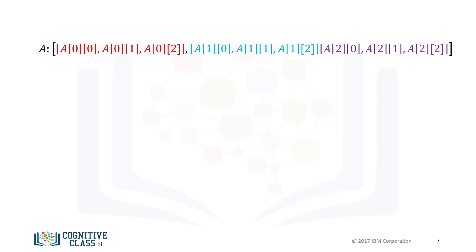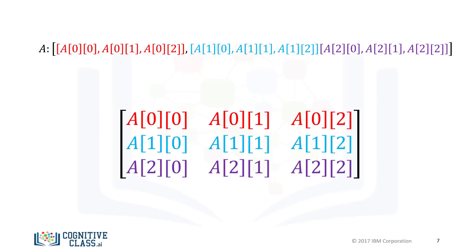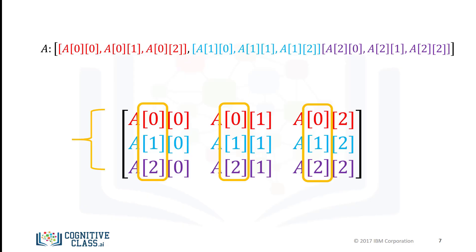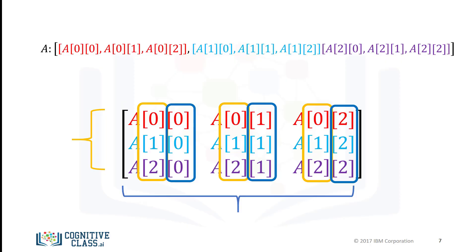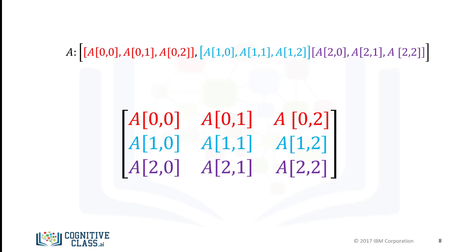We can use rectangular brackets to access the different elements of the array. The following image demonstrates the relationship between the indexing conventions for the list-like representation. The index in the first bracket corresponds to the different nested lists, each a different color. The second bracket corresponds to the index of a particular element within the nested list. We can also use a single bracket to access the elements as follows.